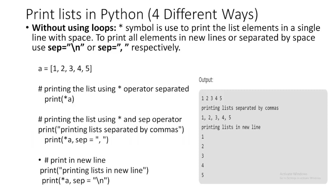The second way is without using a loop. The asterisk (*) symbol is used to print list elements in a single line with spaces. To print all elements on a new line or separated by a specific character, use sep='\n' or sep=','.